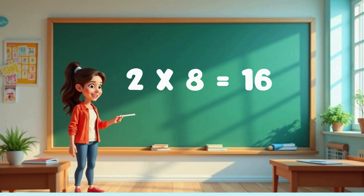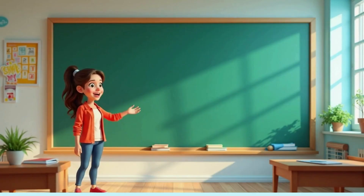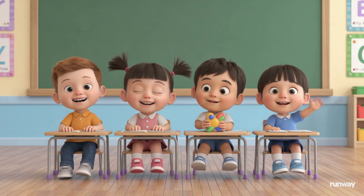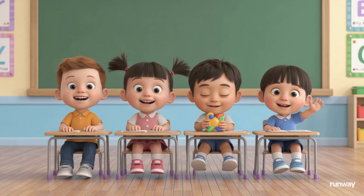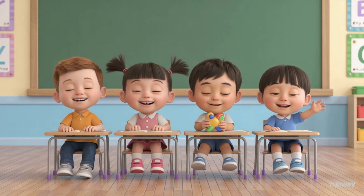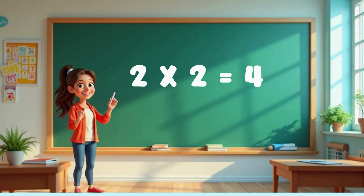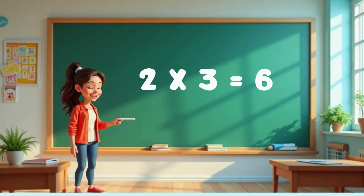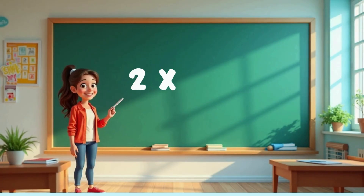Two eights are sixteen. Two eights are sixteen. Two nines are eighteen. Two nines are eighteen. Two tens are twenty. Two tens are twenty.